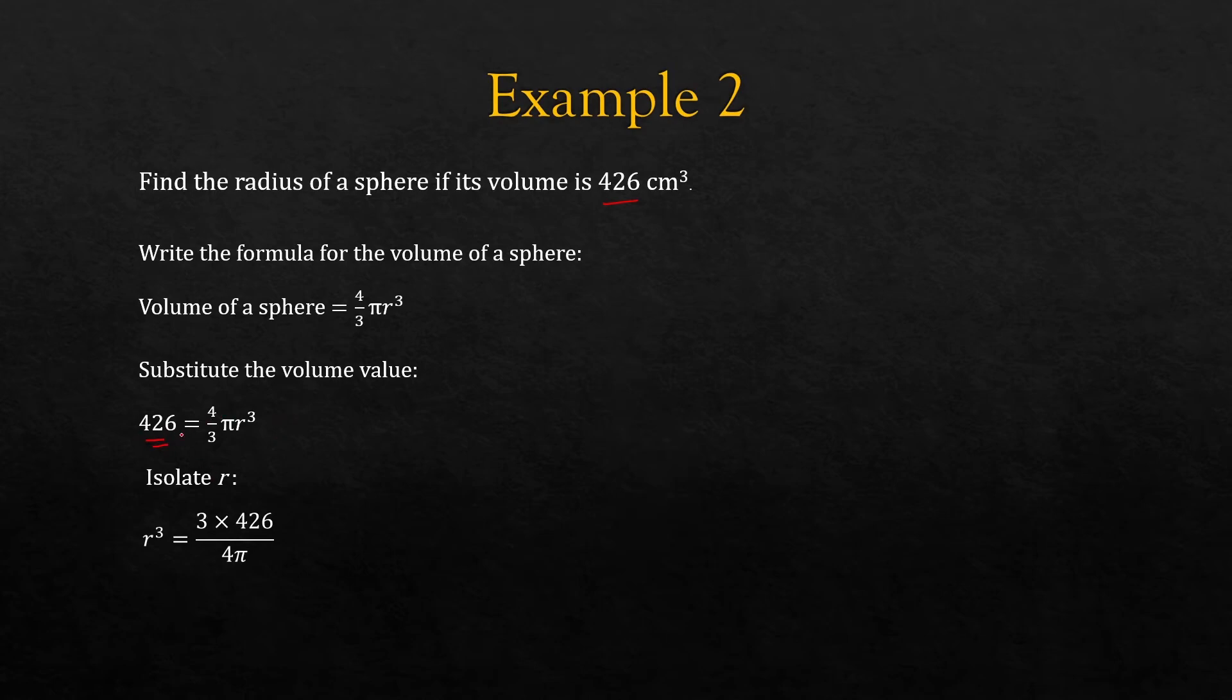So the quick way: we multiply both sides by 3, which will cancel that 3 there. So basically the 3 will go up here. Then the 4 pi will come down to this side underneath. So all I'm doing here is rearranging the formula.